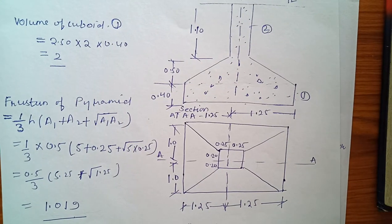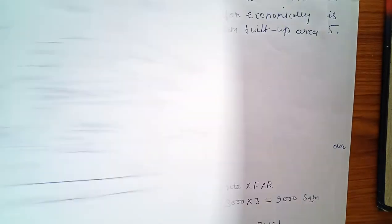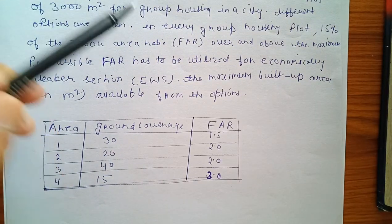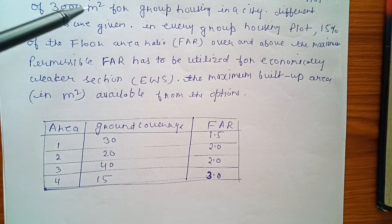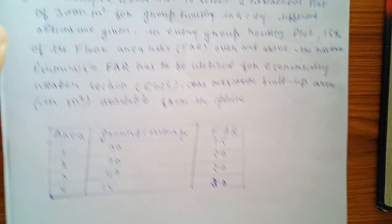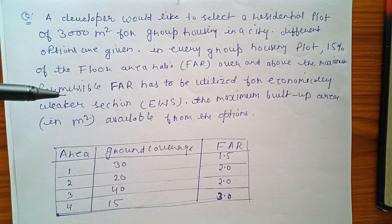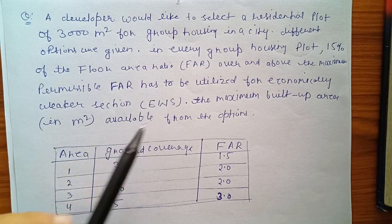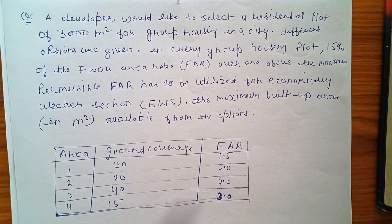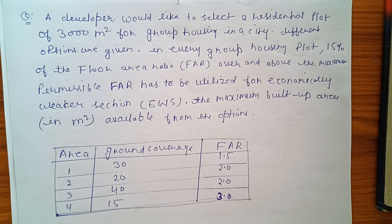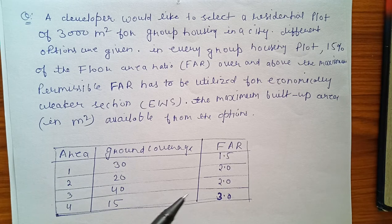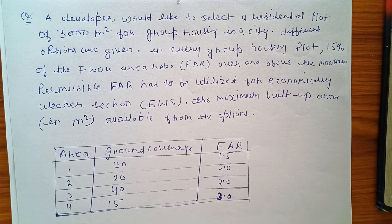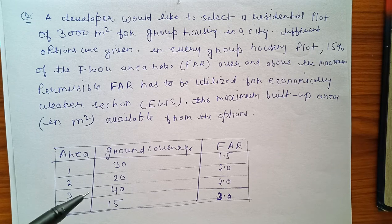Another question: A developer would like to select a residential plot of 3000 square meters for group housing in a city. Different options are given. In every group housing plot, 15 percent of the floor area over and above the maximum permissible FAR has to be utilized for EWS. The maximum built-up area available from the options - so here calculating for option 4.